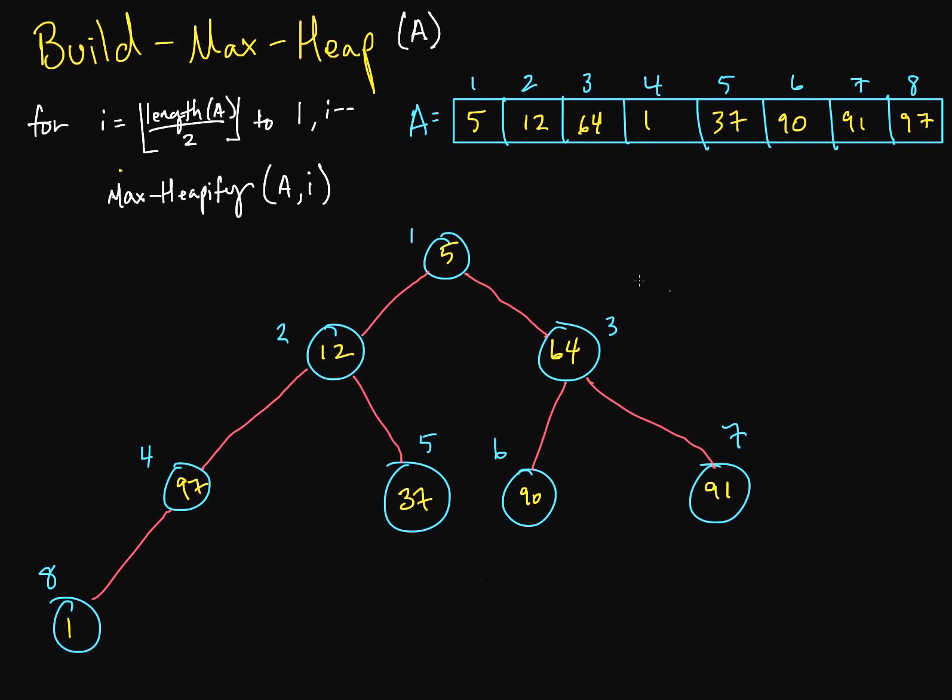I gets decremented, and now I is over here. So let's max heapify this. Both children are clearly greater than the parent node, so we take the larger of the two which is ninety-one. So ninety-one and sixty-four get swapped. And we decrement I. What I should be doing is swapping these: ninety-seven and one got swapped, and then sixty-four and ninety-one got swapped.